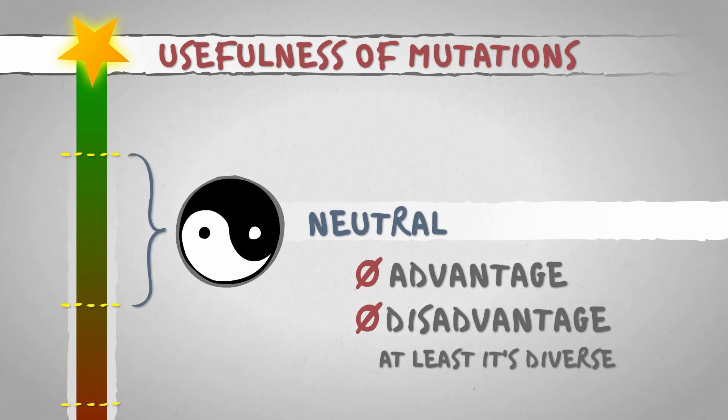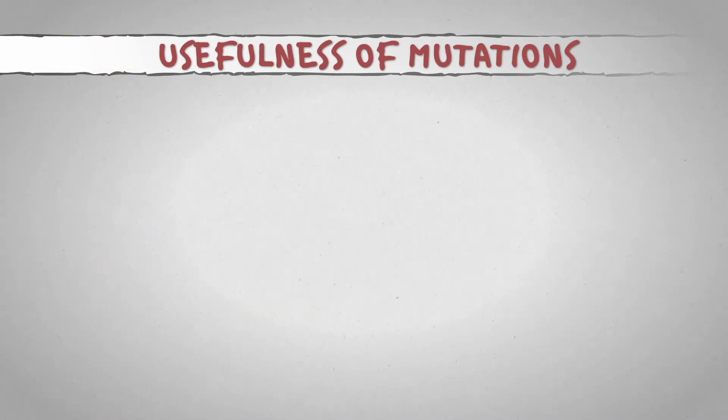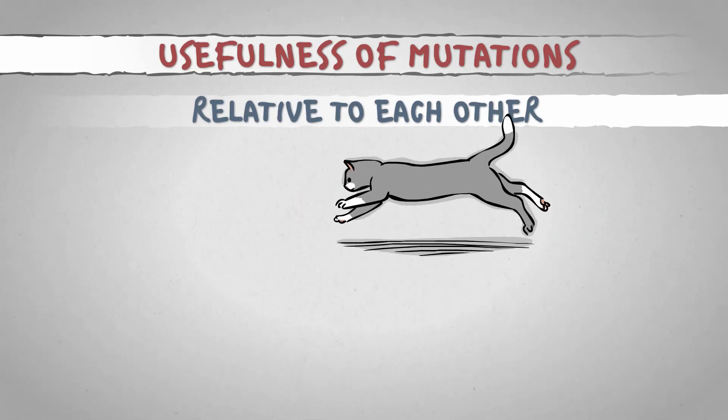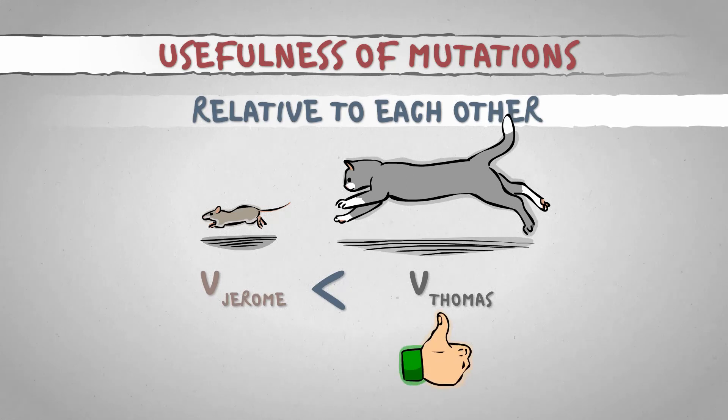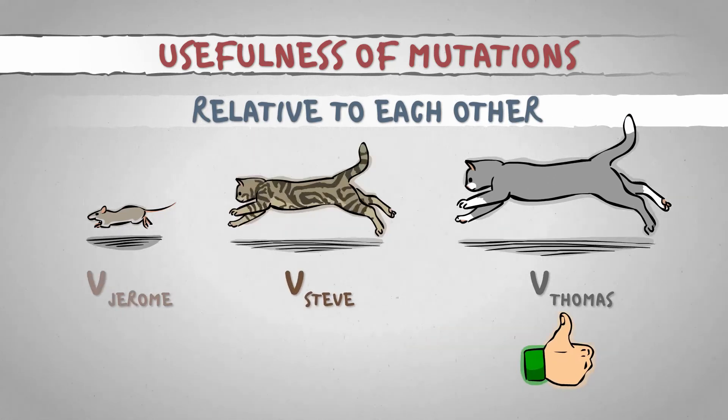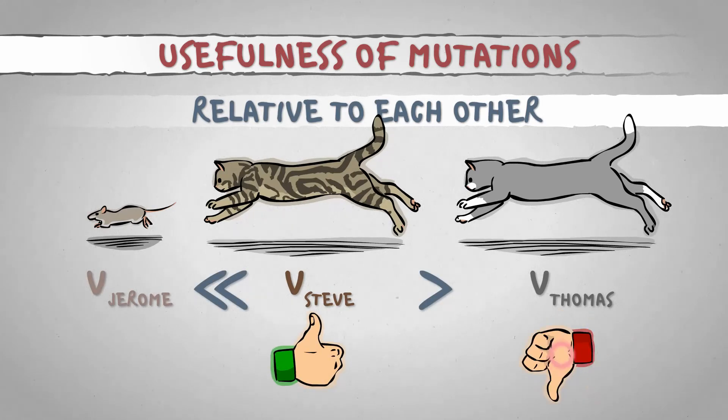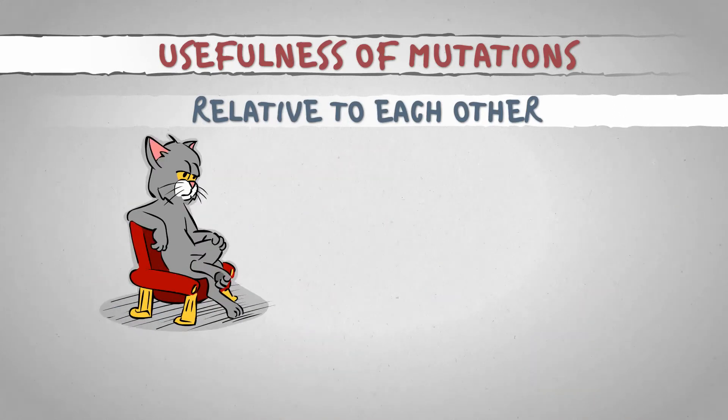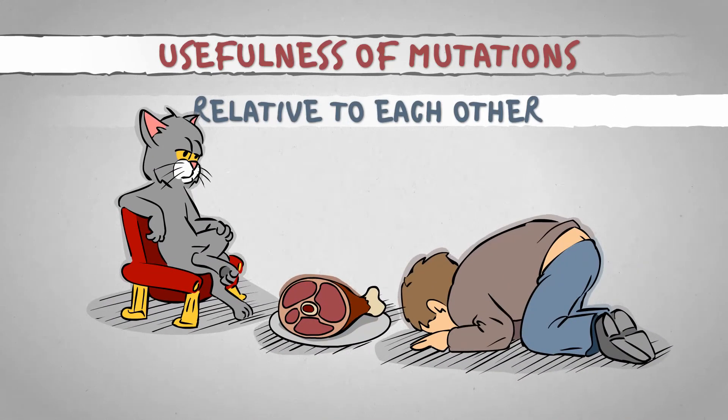But the usefulness of mutations can change if competition between them arises. For example, as a cat, being just about faster than a mouse is only advantageous as long as there are plenty of mice around and you don't need to race an even faster cat for them. And if all the mice are gone, there's no use running around like crazy, you need to enslave humanity instead.